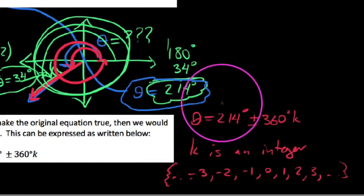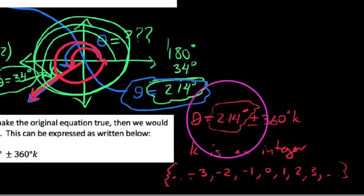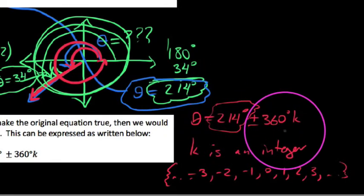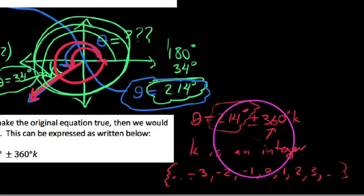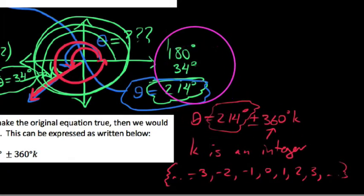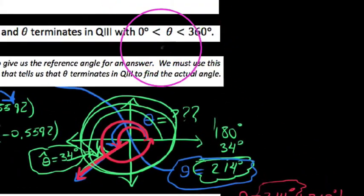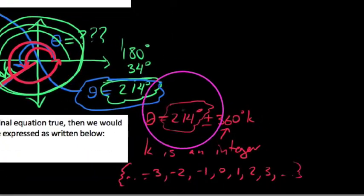So what this really means is any angle that makes this true would just be 214 degrees or anything coterminal with it. We could just add on or subtract off a full rotation. But in this instance, looking right here, we said we wanted an angle between 0 and 360. So we'll just keep the 214.